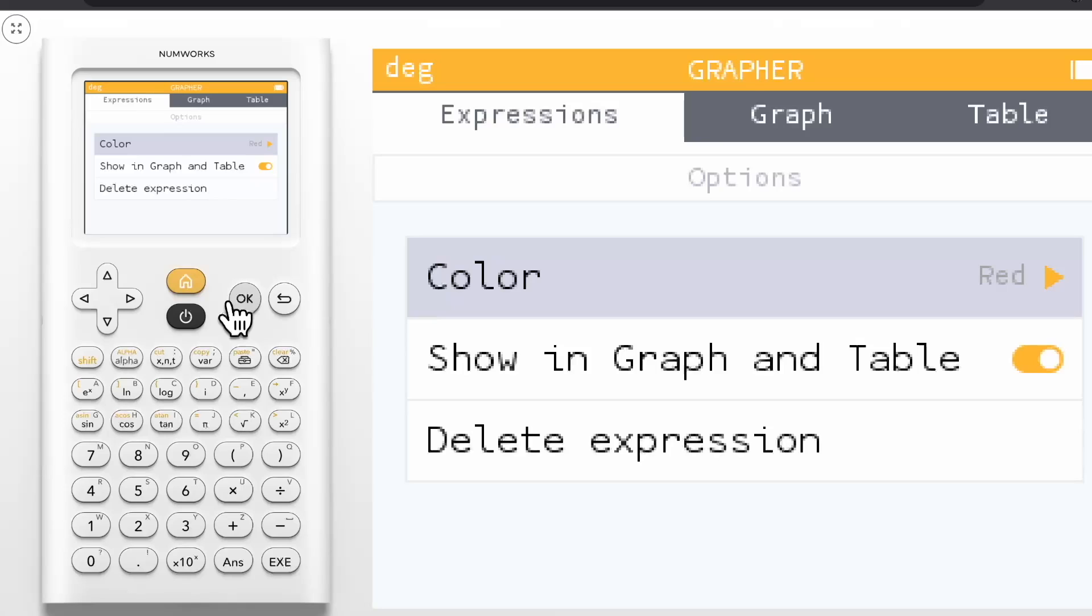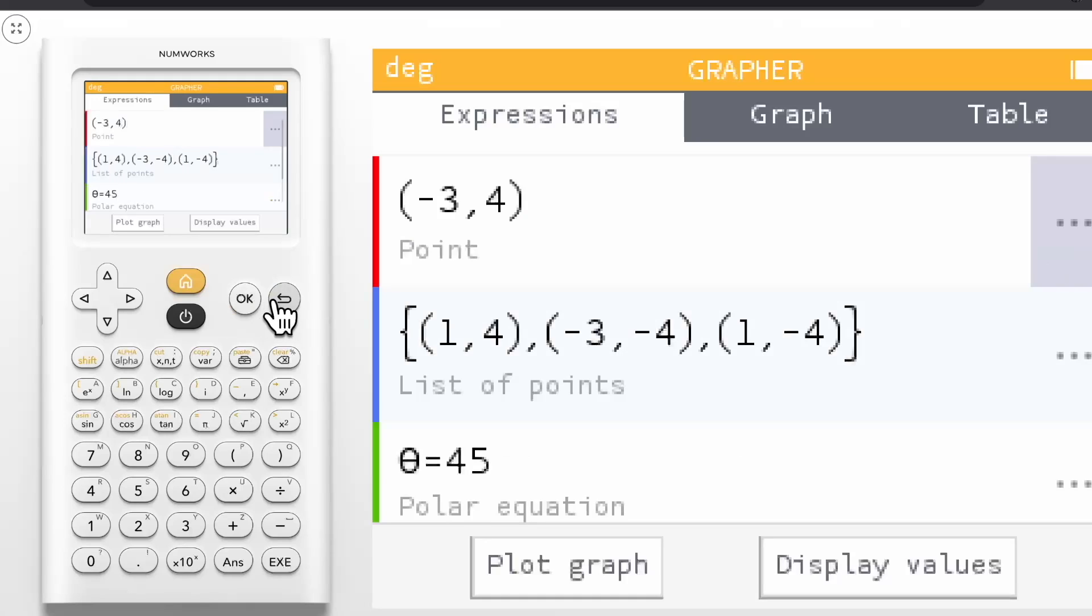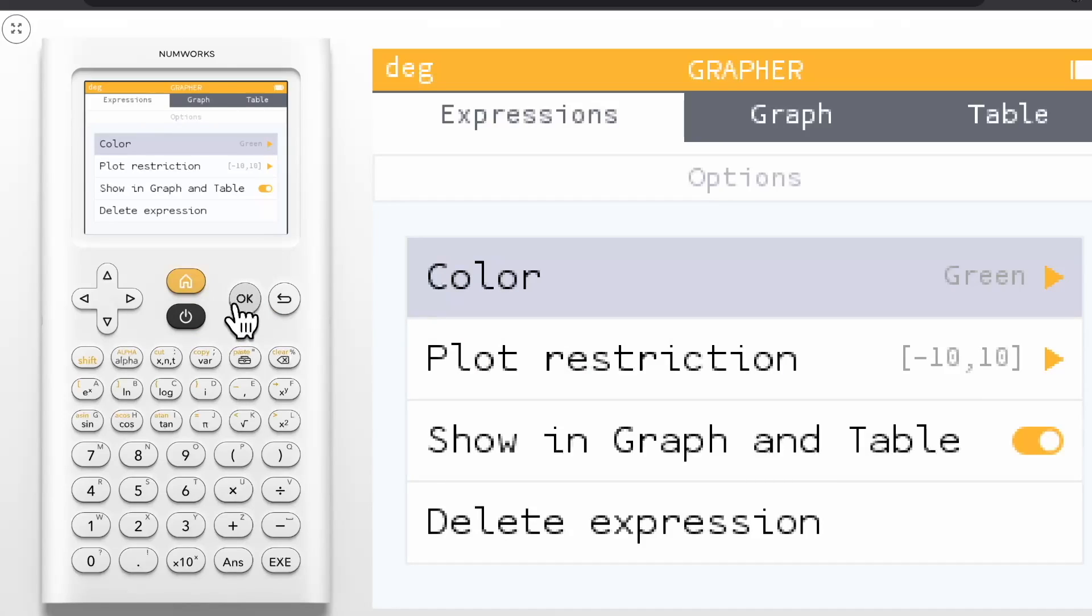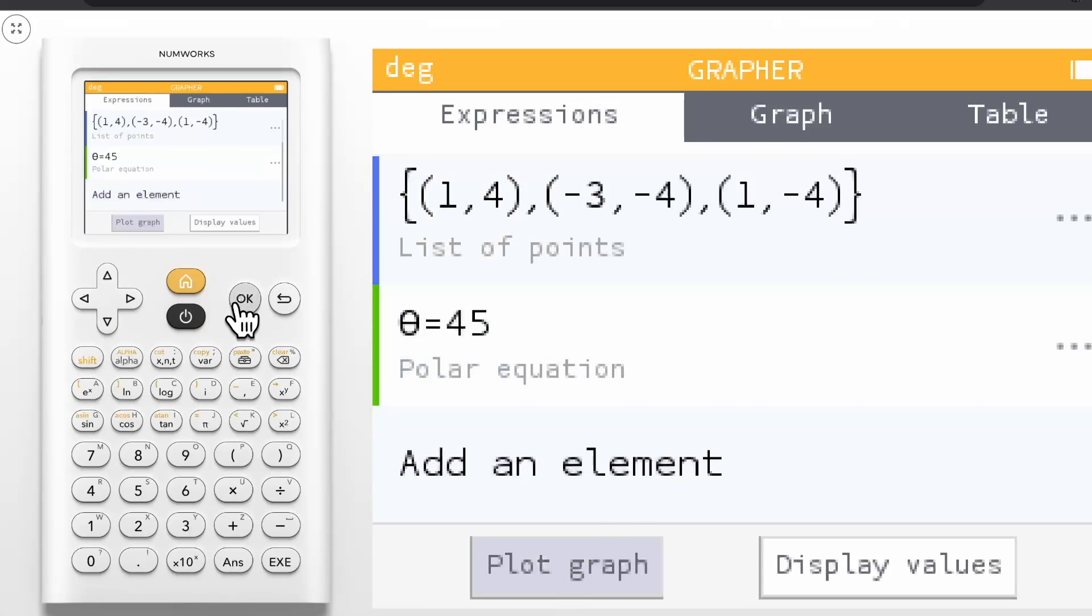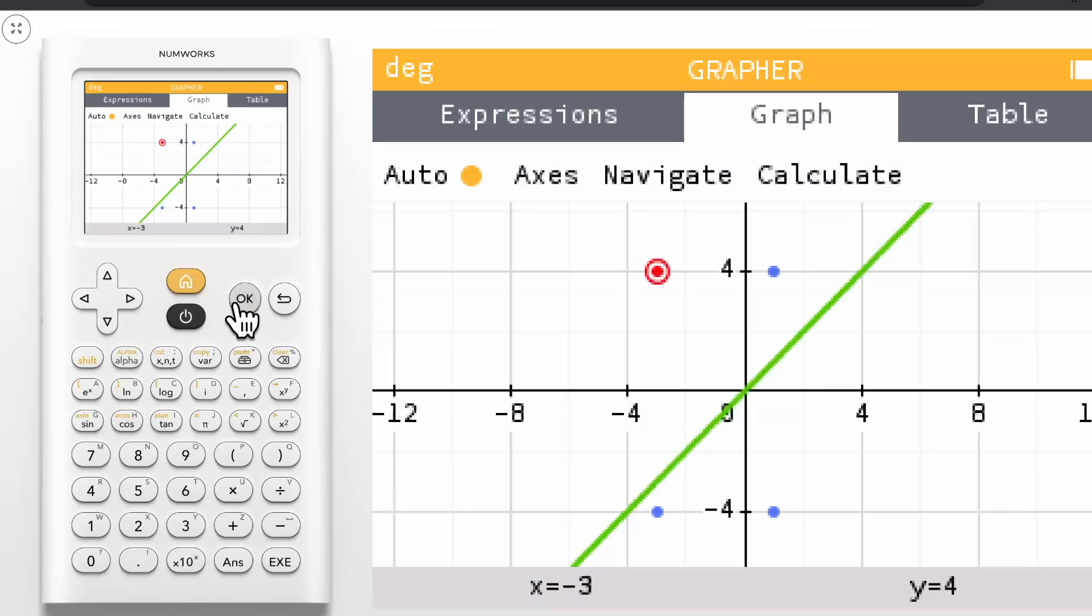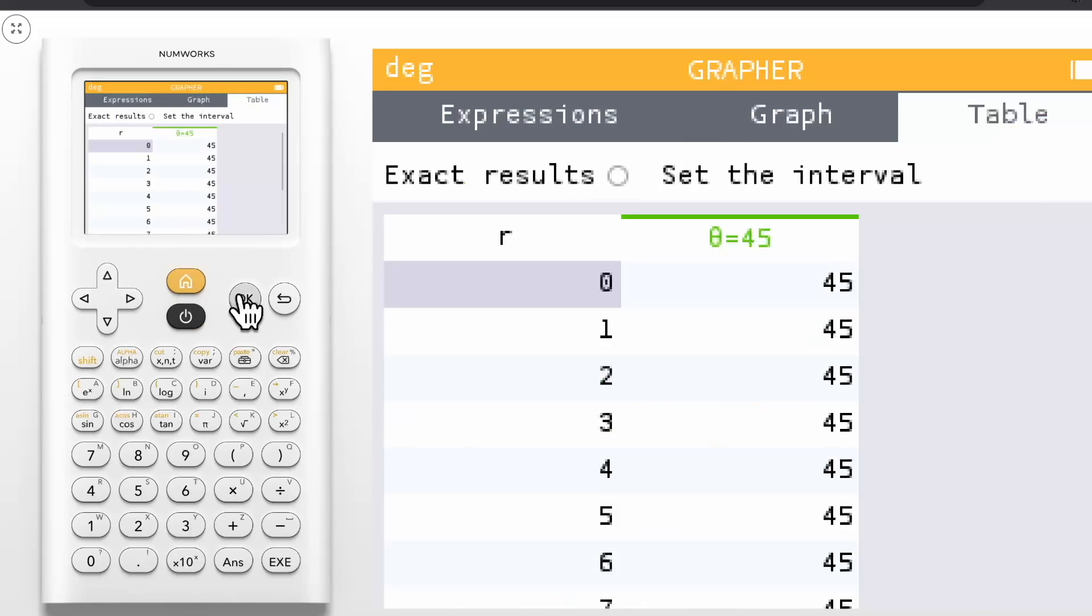For points and list of points, you can change the color, toggle them off, or delete them. Backing out, we can look at the three dots for the polar line. Here you can change the color, change the plot restriction, toggle them off, or delete them. For the plot restrictions, you can restrict the R values you want the line to cover. For the graphs of these types of expressions, you can use your up and down arrows to navigate between expressions, and left and right to move through the expression's graph. For the table of values, we have the input value R for the output value theta.